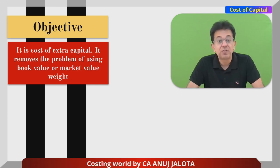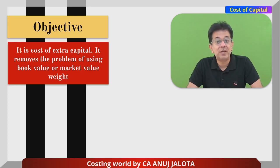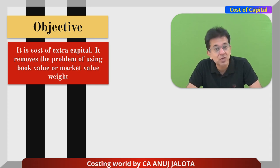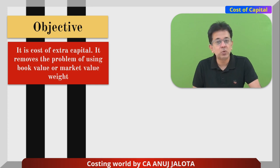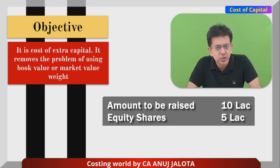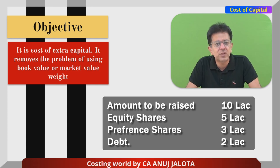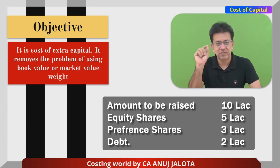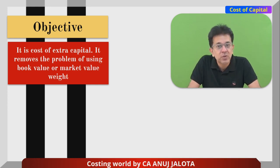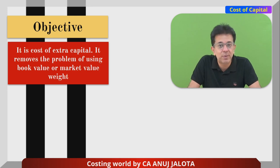One reason why marginal cost of capital is preferred is that there are always debates about whether to use market value weights or book value weights — those problems do not arise when finding marginal cost of capital. For example, you have 20 lakh rupees of capital and are about to raise 10 lakh rupees more: 5 lakhs by equity shares, 3 lakhs by preference shares, and 2 lakhs by debt. So the weights are calculated based on 5L, 3L, and 2L — absolutely no problem of book value or market value. Cost of extra funds you are going to raise is called marginal cost of capital.